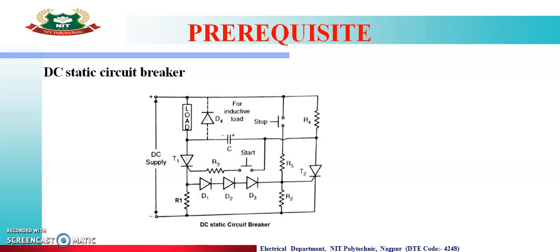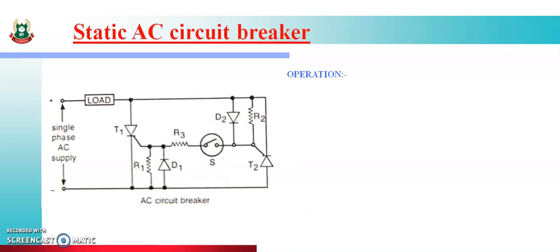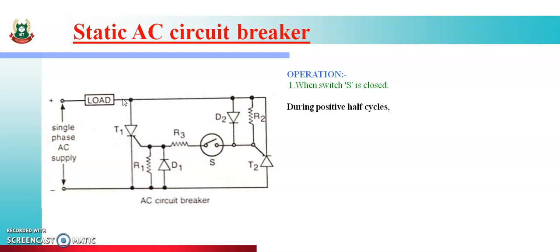Now we are going to study the AC static circuit breaker. Here the input is AC supply. The circuit uses two SCRs — SCR T1 and SCR T2 — and one switch. First, let us see what happens when the switch is closed. The AC supply has a positive half cycle and a negative half cycle. During the positive half cycle, the upper terminal is positive. Of the two SCRs, the one whose anode receives the positive will be forward biased — that is T1, since T1's anode is connected to the upper positive terminal, while T2's cathode is connected to it.